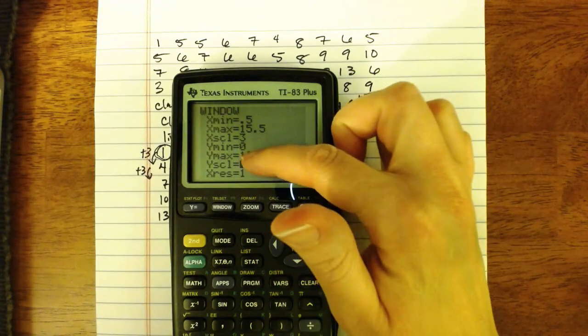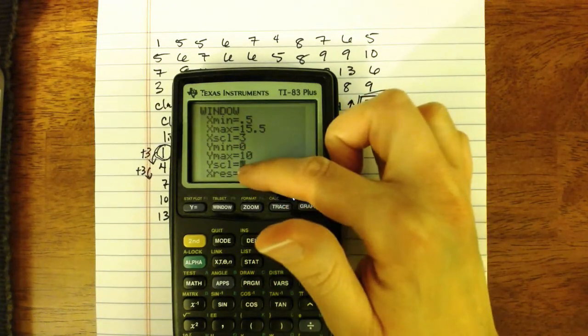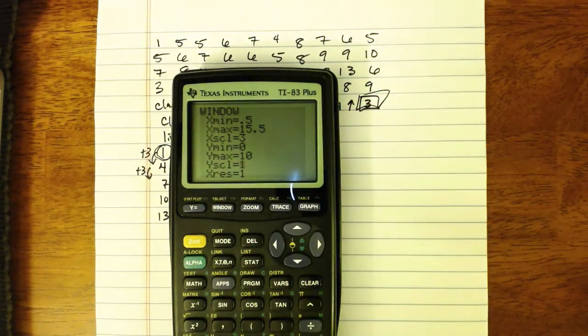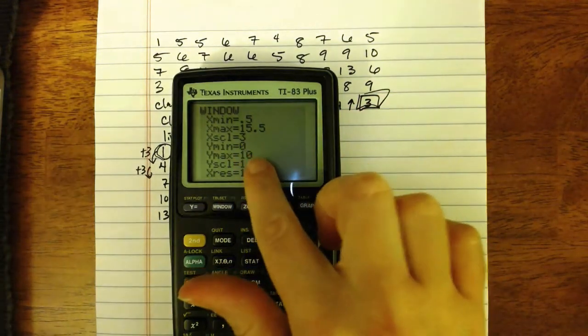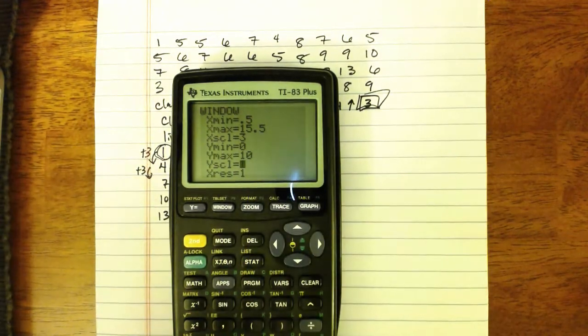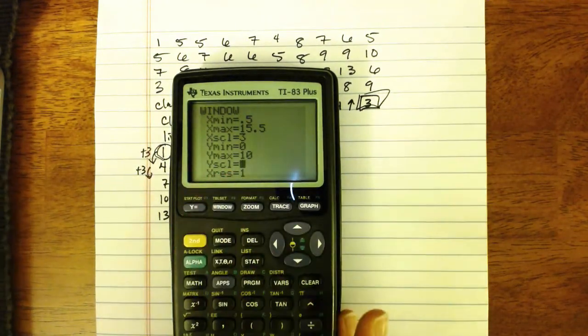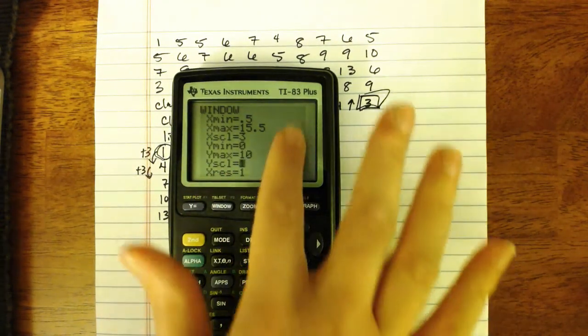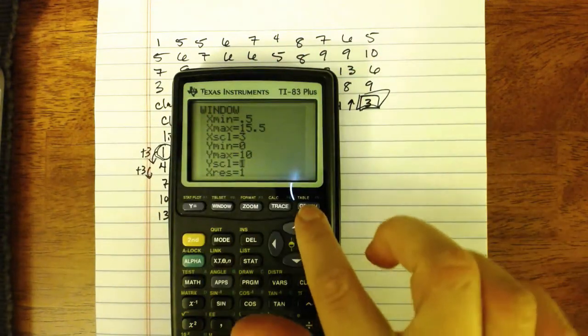And then your Y scale here, since we're going from 0 to 10 on the Y axis, doing that in increments of 1 would be fine. If I'm going from 0 to 500, I might want to use increments of 100, for example. So just use something in Y scale that makes sense. And then when you have your window all set up, press graph.